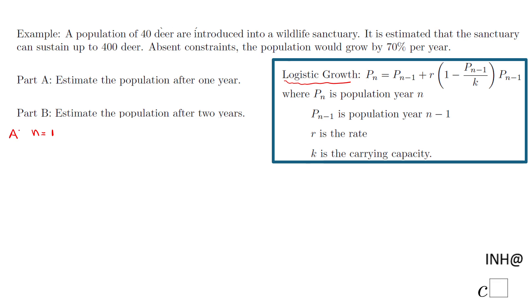So we're gonna have here P sub 1 equals P sub 0 plus, now the rate is 70 percent, so that will be 0.7 in decimal form, parentheses 1 minus P sub 0 over k.